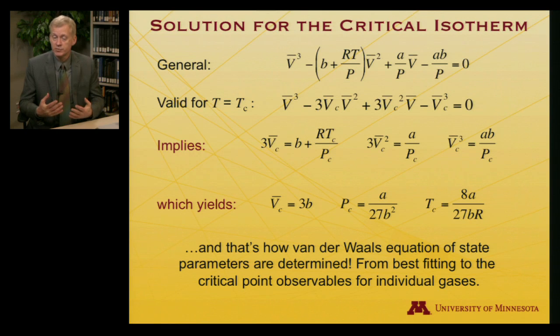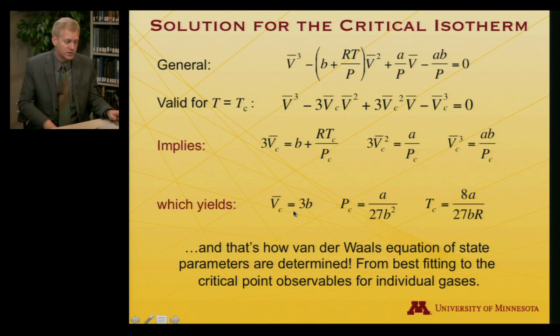That's where these parameters in the van der Waals equation of state come from. They're not just plucked out of thin air or played around with until they fit experimental data. Instead, you do experiments required to get the critical properties—the critical pressure, temperature, and volume. Once you have those, you select the A and B parameters that best reproduce the experimental data.